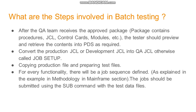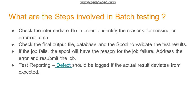What are the steps involved in batch testing? Once the QA team receives the approved package from the developer, you convert the production JCL to a test JCL with the job setup. You copy all the production files into test files. Every job in the sequence is submitted using the SUBMIT command with the test data files. You then check for errors using JCL scan. Finally, you check the output files, database, and spool to validate the test results. If a job fails, go back to the spool to check the reason for the failure.